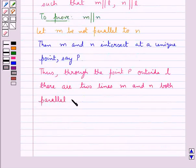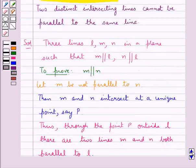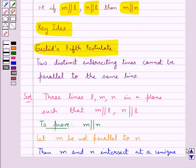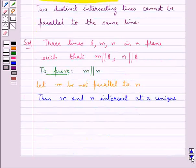But according to Euclid's fifth postulate, we have that two distinct intersecting lines cannot be parallel to the same line. So,